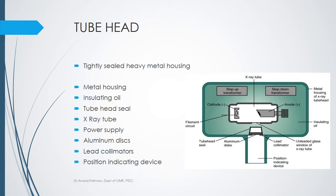The tube head has a very tightly sealed heavy metal housing coated with lead to prevent x-ray scattering and converge it to one point. It contains insulating oil which also acts as a coolant, because a lot of heat is generated in x-ray production. The tube also consists of step-up and step-down transformers. The x-ray tube — a vacuum tube or Coolidge tube — consists of the anode and cathode, along with aluminum discs, filters, lead collimators, and a position-indicating device.